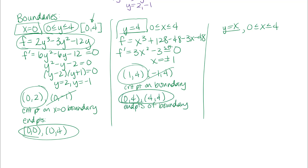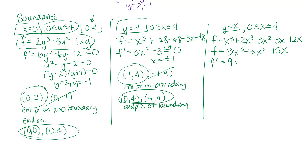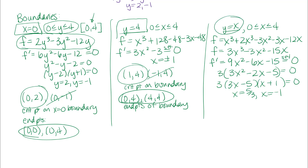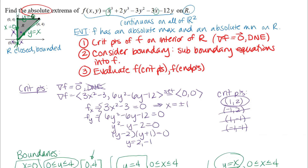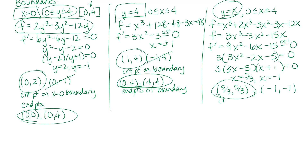For the third boundary y = x, I substitute x in place of y in the original function, getting a function in x alone. After combining like terms, I take the derivative and set it equal to zero, obtaining two x values. Along y = x, these give the points (5/3, 5/3) and (−1, −1). Checking the region: (5/3, 5/3) is on this boundary of the region, but (−1, −1) is outside and is discarded. I also have the endpoints of this boundary to consider.